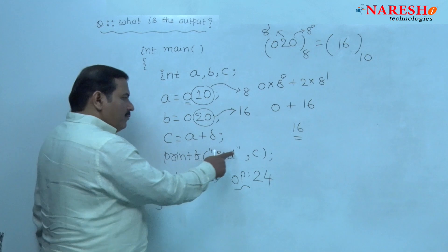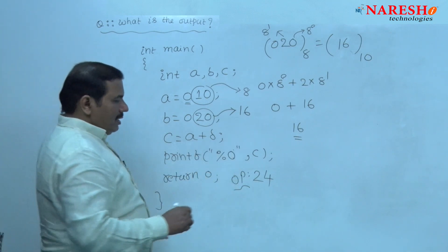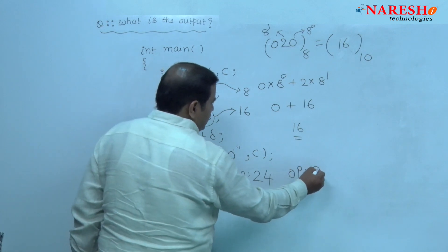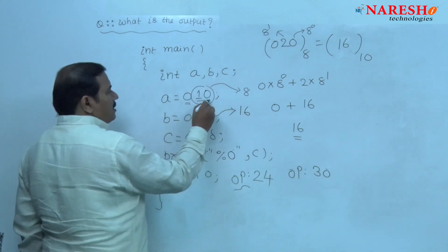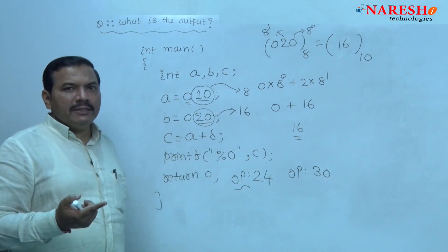Suppose the format specifier is percent O. At that time the output printed as 30. Octal number 10, octal number 20, 10 plus 20 is 30.